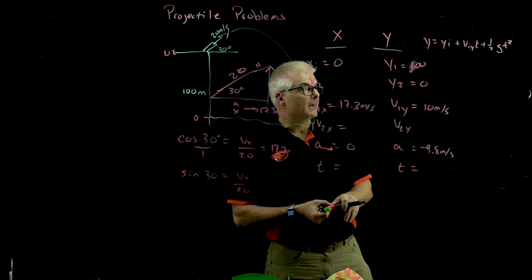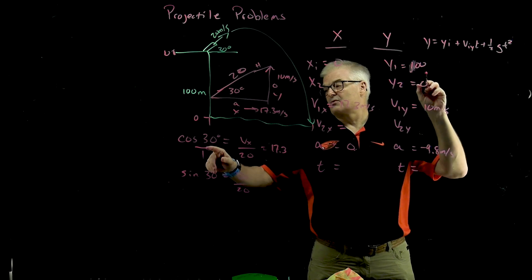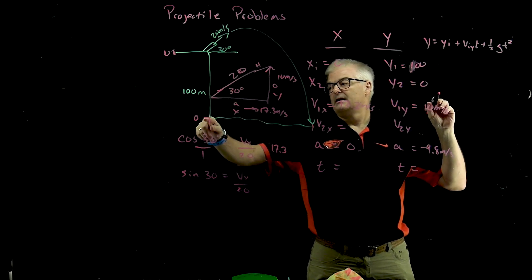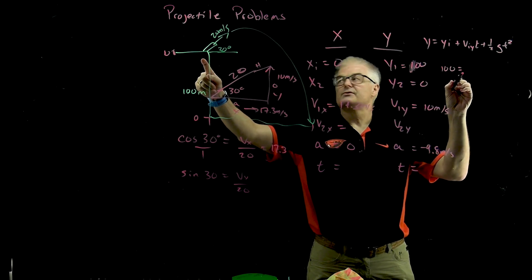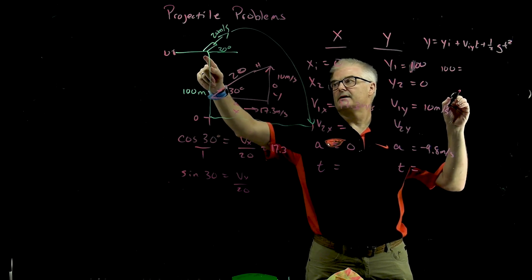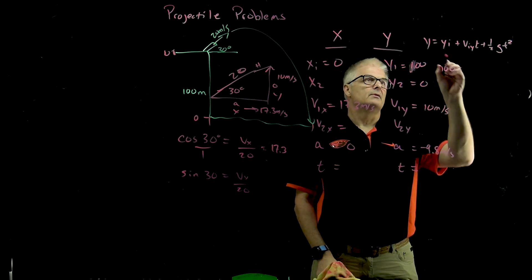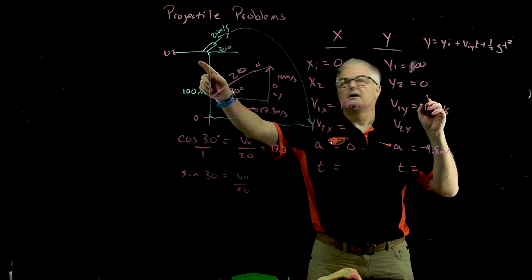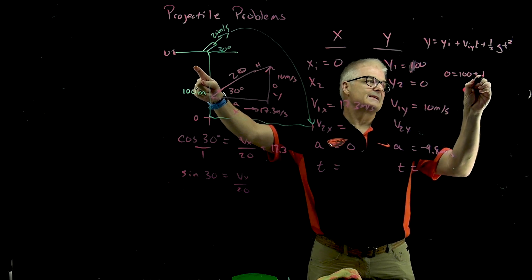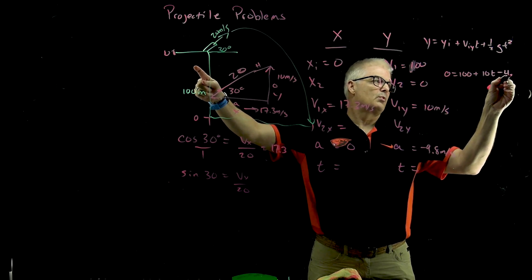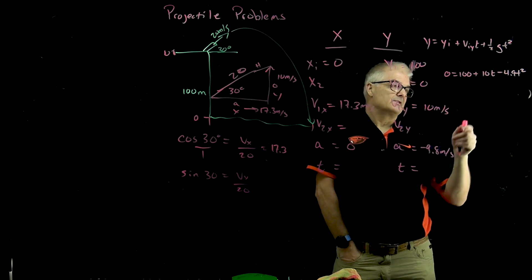We'll use that first equation: y equals y initial plus viy t plus one half g t squared. This is a little more complex because now we have a quadratic. Initial y starts at 100. So this is zero equals 100 plus 10t minus 4.9 t squared. G is negative 9.8 times a half, that's 4.9.